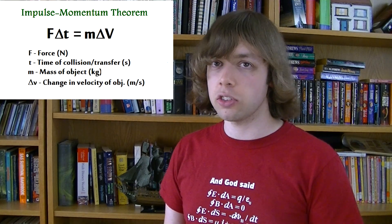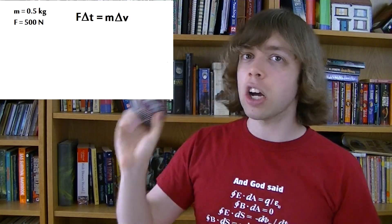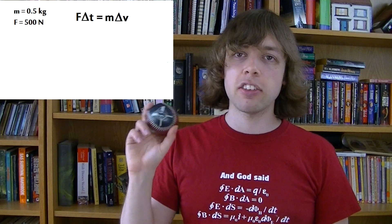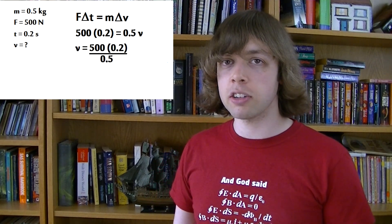So if a 0.5 kilogram baseball is hit with a bat at a force of 500 newtons, and if the bat and the ball are in contact with each other for 0.2 seconds, then we can calculate the velocity of the ball as it goes flying off the bat. We have our equation, we plug the numbers we know in, the force, 500 newtons, the 0.5 kilograms for the ball, and the 0.2 seconds. Divide both sides by the mass of 0.5 kilograms, and we're left with the change in velocity as the subject.